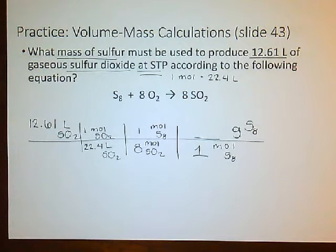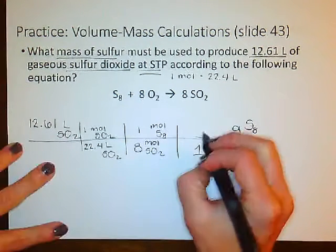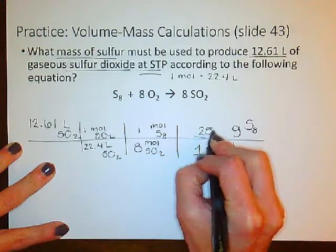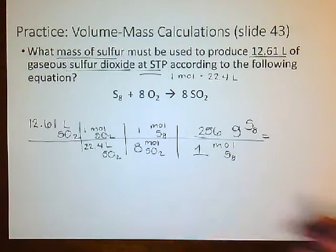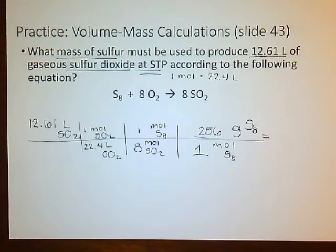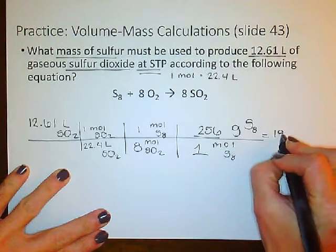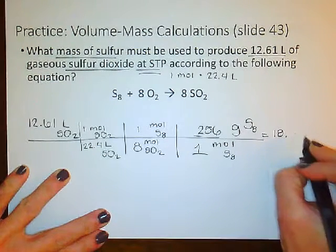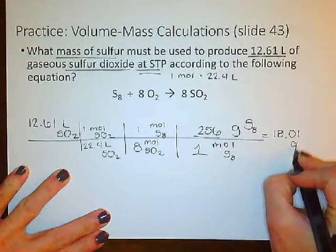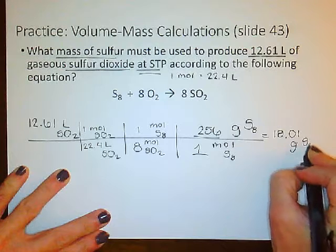We know that sulfur weighs 32 and there are 8 atoms of it, so our total molar mass for sulfur is 256 g/mol. Now we multiply straight across: 12.61 times 256, divided by 22.4 times 8, and that gives us a total of 18.01 grams of sulfur.